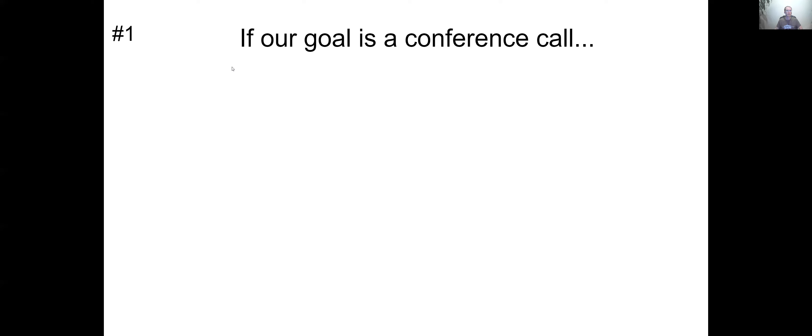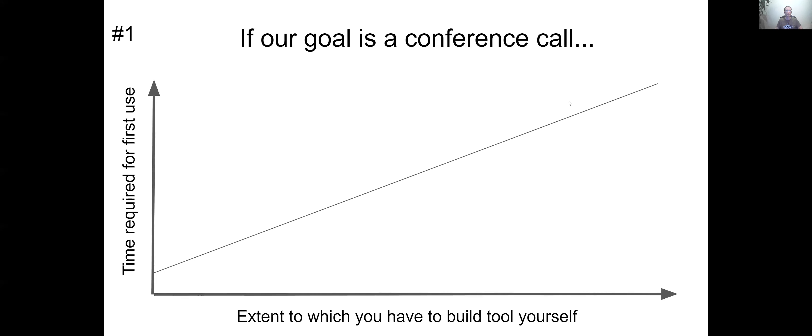So here's our first example. Let's say our goal is to just accomplish a conference call. So here's our graph here. Where would we put Zoom on this graph? I'd put it somewhere down here because the time required to use it for the very first time is pretty small, so that means it should be further down on this y axis. And the extent to which you have to build the tool yourself - sure, you have to create an account or something, but it's pretty easy to get that going. So in just a few minutes, you can set up Zoom and hop on a conference call.